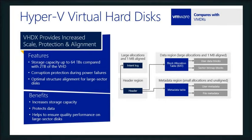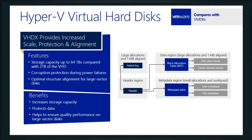Moving on quickly into virtual hard drives — VHD and VHDX are our hard drives, comparable to VMware's VMDK. We actually support up to 64 terabytes inside VHDXs versus 2 terabytes for VHD. So even within our own technology, we really grew how big these virtual hard drive files can be. There's a lot we've done with storage under the covers to help protect them, including optimized structure for large sectors and increased storage protection.